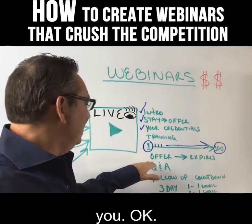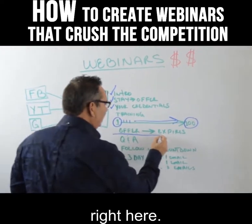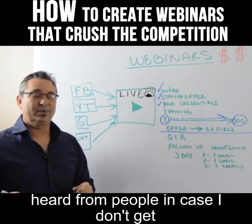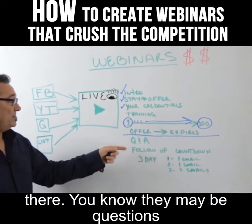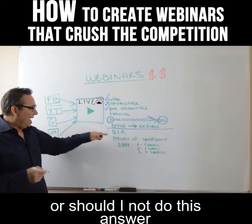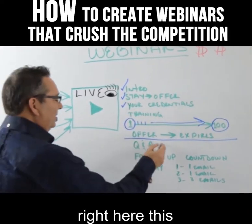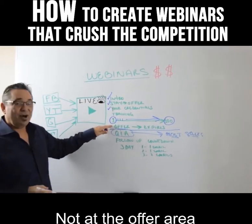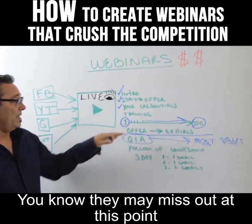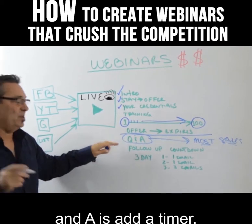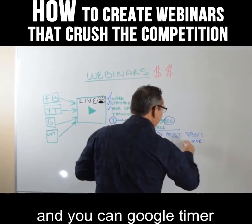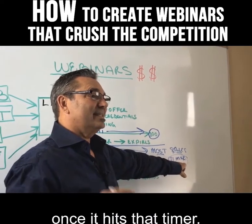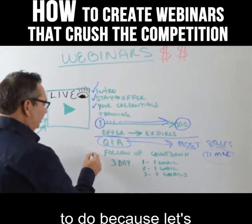At the end of the webinar, make sure you do a Q&A. I also like to write down questions I've heard from people in case I don't get enough from the crowd — questions about uncertainty or whether they should take action. This Q&A area is actually where you get the most sales, not at the offer itself, because attendees feel like the session is wrapping up. I also add a visible countdown timer during Q&A — you can find a video of one online — so they can see the offer expiring in real time.